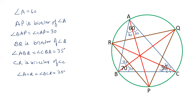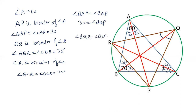Angle BAP and angle BQP are equal because they are angles in the same arc. Since angle BAP is 30 degrees, angle BQP is also 30 degrees. Similarly, angle BQR is equal to angle BCR, and we have just calculated that BCR is 25 degrees, so angle BQR is 25 degrees.